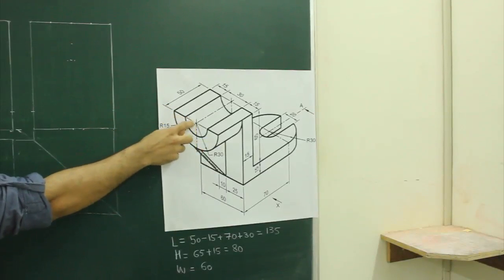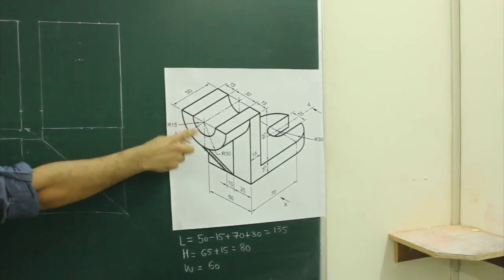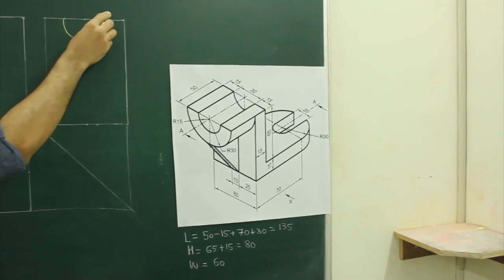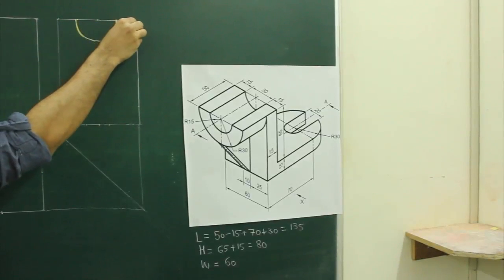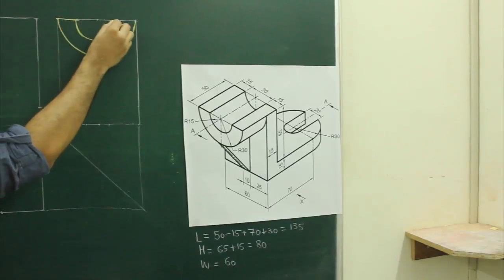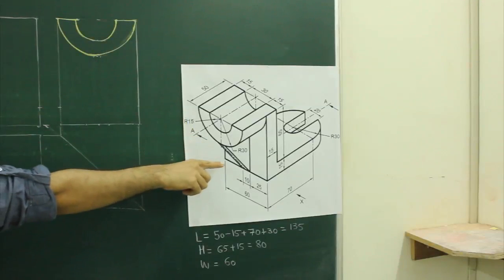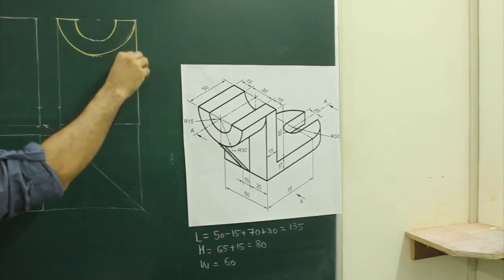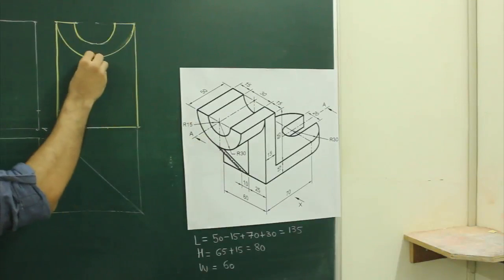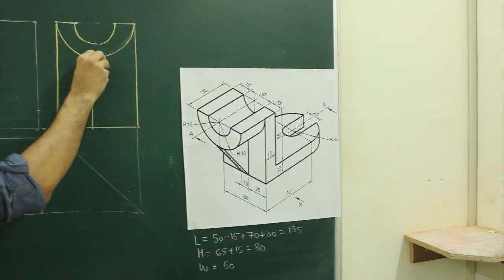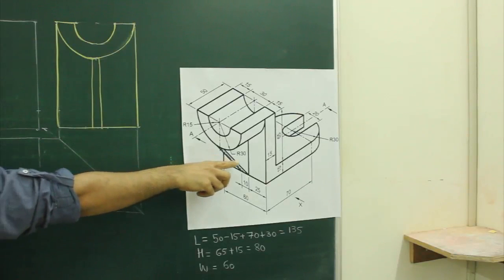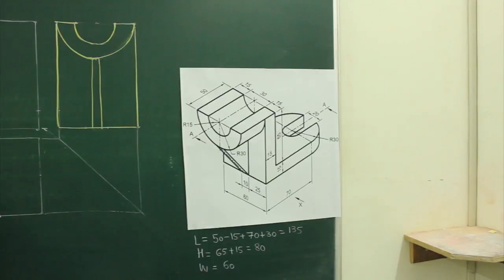We can see this circular view in side view. So how much is the radius — 15 and 30. First from the center we will draw radius 15, then we will draw radius 30. After that when you see from the side, you will see this rectangle as well as these two rectangles — this full rectangle and this rectangle which is straight down. When you see from side view, you will not be able to see the part which is behind — see this edge.